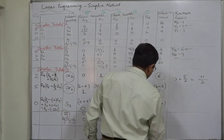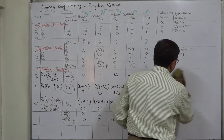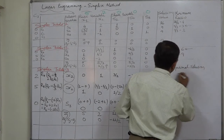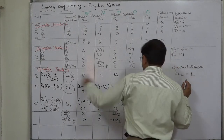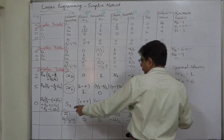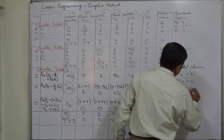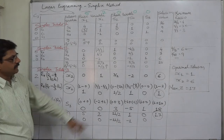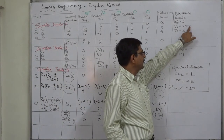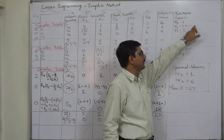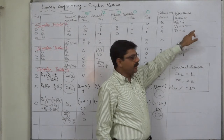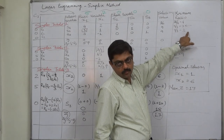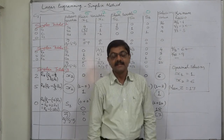The optimal solution of this problem is: X1 = 1, X2 = 6, and maximum Z = 17. I repeat, we had selected row 2 where there was a tie between the two replacement ratios. We can also move forward by selecting row 3. I again suggest you to do this sum in your notebook by selecting the third row in the first table. Thank you very much.